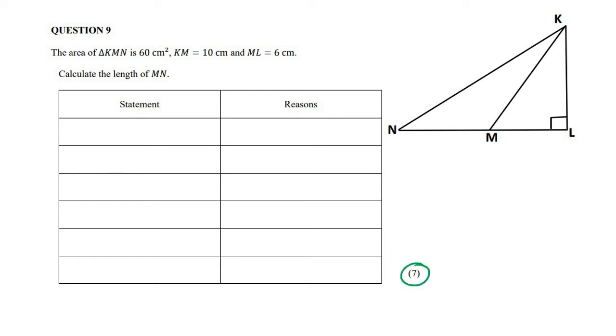Here we have a nice seven mark question. They tell us that the area of triangle KMN is 60 centimeters squared. This one's area is 60 cm², and they tell us that KM is 10, so this length is 10, ML is 6, and what do they want? Calculate the length of MN.